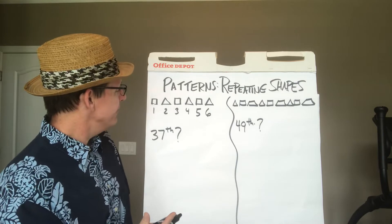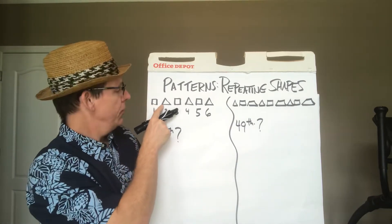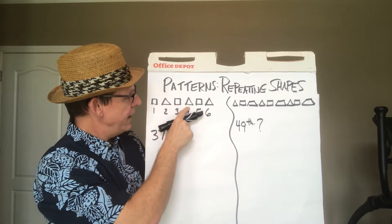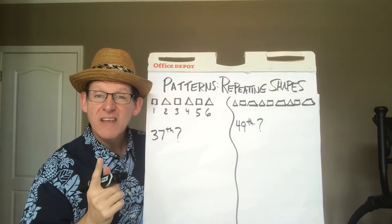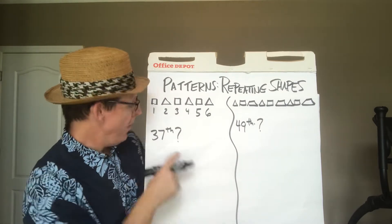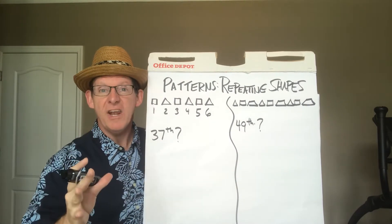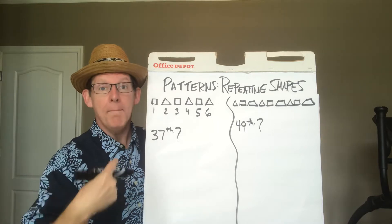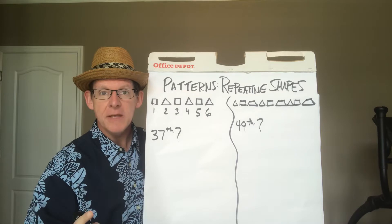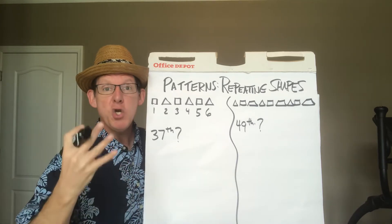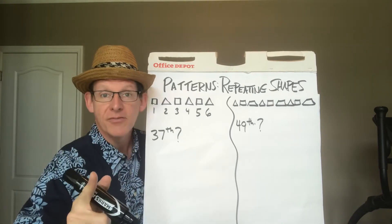Our first pattern we have involving shapes is a square, triangle, square, triangle, square, triangle. Not too complicated, but the question is, what is the 37th shape? Now you might say to yourself, Mr. Senhauser, do you want me to go ahead and draw this pattern out to the 37th shape? That's ridiculous! Nobody can do that! Somebody's gonna make a mistake! And you know what I'd say? You're absolutely right.